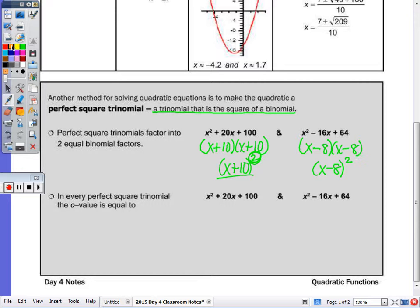Notice in each of these that this middle term is double the number. So you double 10, you get 20. And then this last term, or the c, is the product of that double. So 10 times 10 is 100. So what number do I double to get negative 16? You could also just cut it in half. So half of negative 16 is negative 8. This sign will always match what's in the parenthesis. So this is a plus, so I have plus plus. And then half of that squared, so 8 times 8 is 64. So to get your c value, to get the 100, to get the 64, we take half of the b value, and then square it.